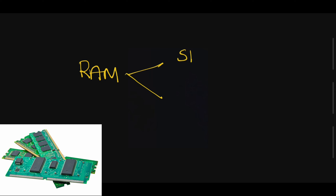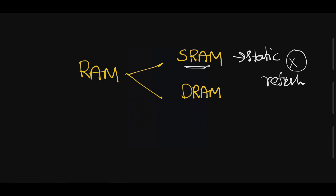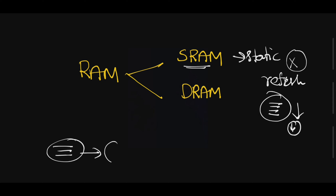RAM is classified into two types. The first one is SRAM and the second one is DRAM. SRAM stands for Static RAM — Static Random Access Memory. It does not require a refreshing rate. That means the content is available until you turn off the computer. Until the computer is turned off, the work you are doing is stored. SRAM is very fast.